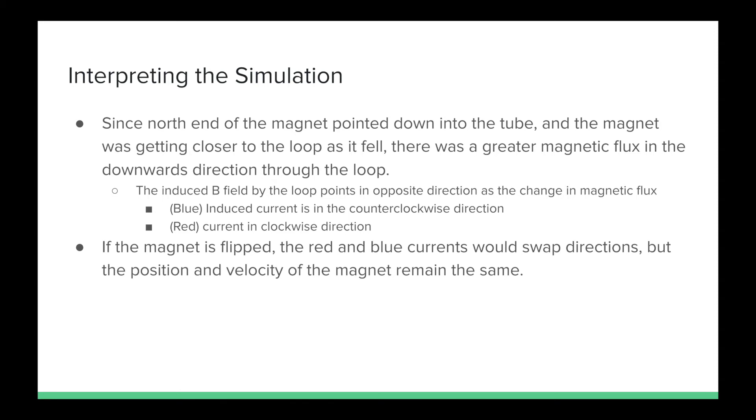If the magnet poles were to be flipped, then the red and blue currents would swap directions, but the position and velocity of the magnet would be the same, resulting in the same time.